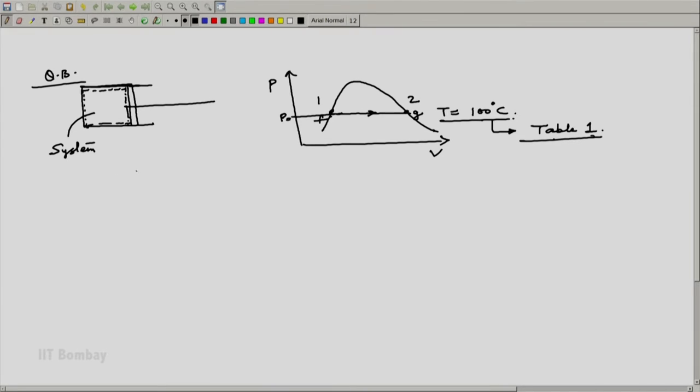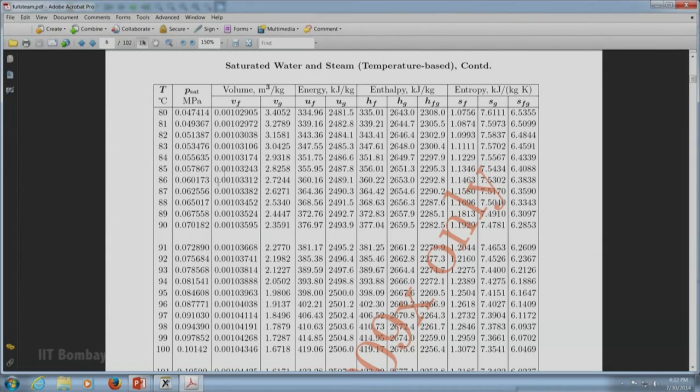If I go to the steam table now and get the values at state 1 and state 2. This is state 1 and this is state 2. Can we get to the steam table? This is table number 1 at 100 degrees centigrade. We know 100 degrees centigrade is the phase change point. That means we have to be at 0.1 MPa, that is atmospheric pressure.